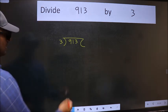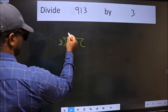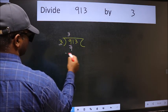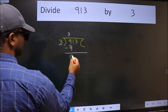Next. Here we have 9 and here 3. When do we get 9 in the 3 table? 3 times 3 is 9. Now we should subtract. We get 0.